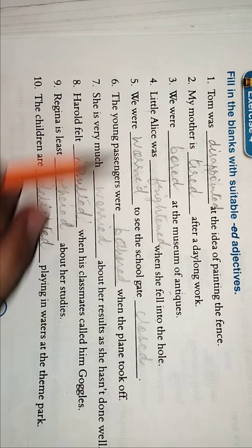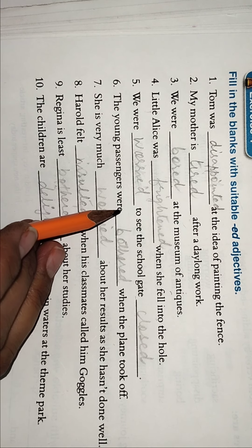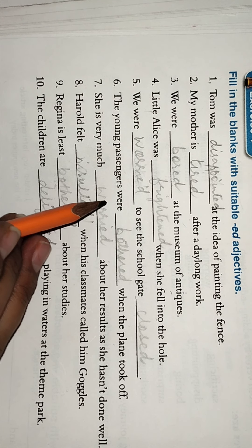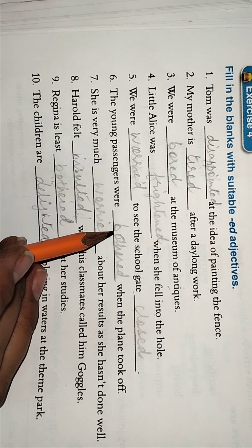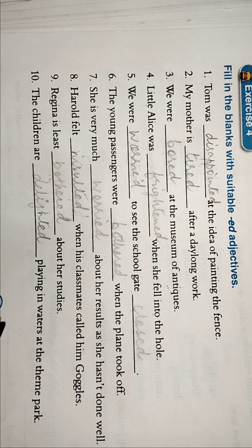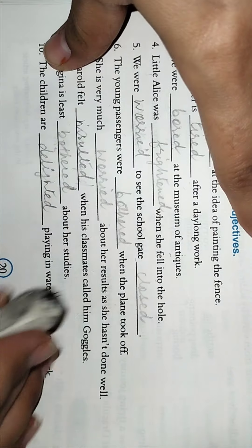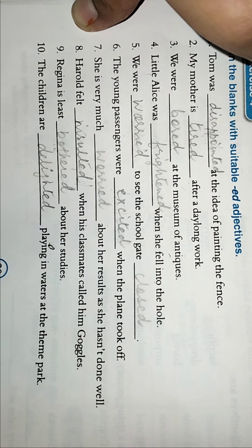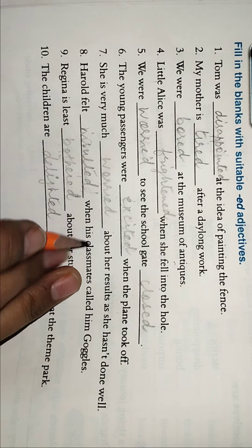Little Alice was frightened when she fell into the hole. We were worried to see the school gate closed. The young passengers were bothered when the plane took off. The young passengers were excited. Excited bhi aa sakta hai, yes, excited bhi aa sakta hai.